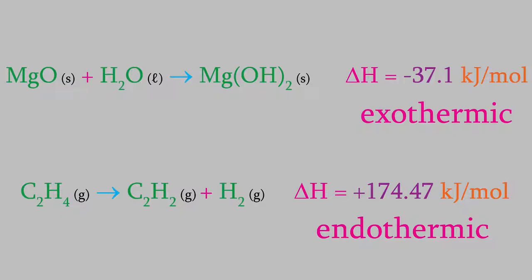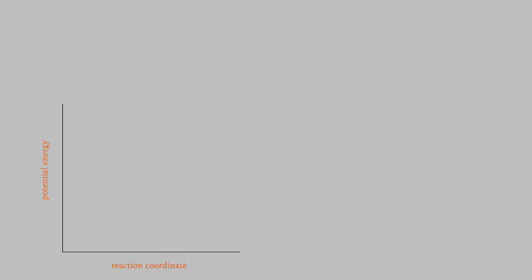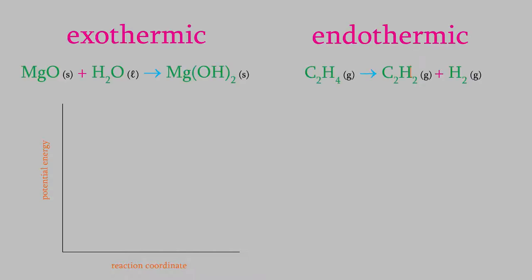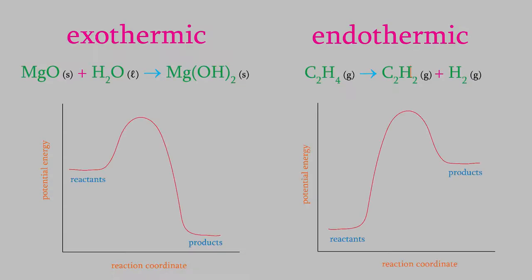As we saw back in video 13, we can make a plot where we draw the potential energy of the chemicals in a reaction as the reaction occurs. If we do that for these two reactions, we get this. As you might expect, the chemicals in the exothermic reaction lose energy, so the products have a lower energy than the reactants. Meanwhile, the opposite is true for the endothermic reaction — the products have a higher energy than the reactants.